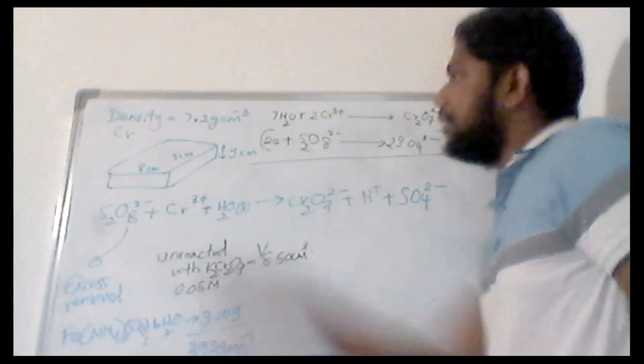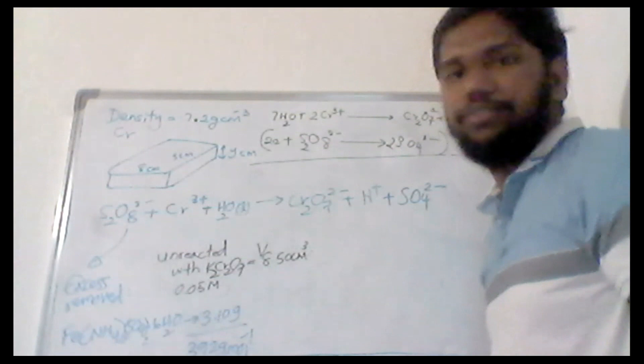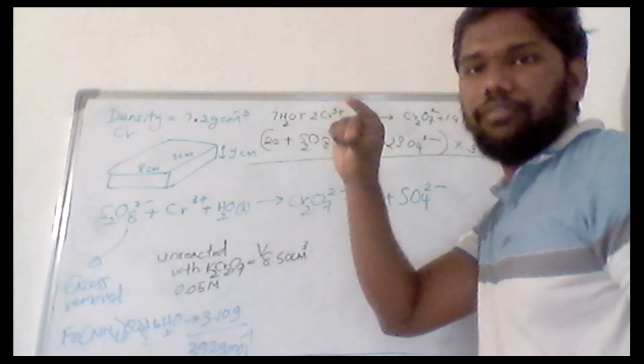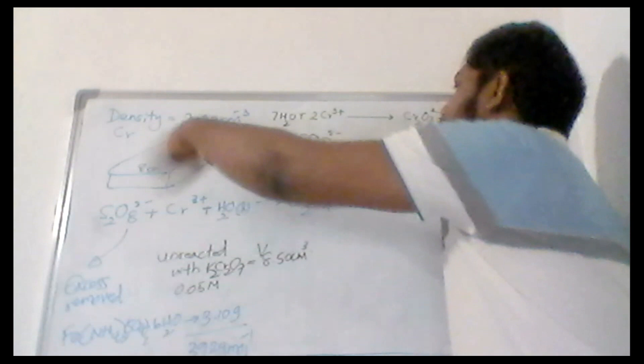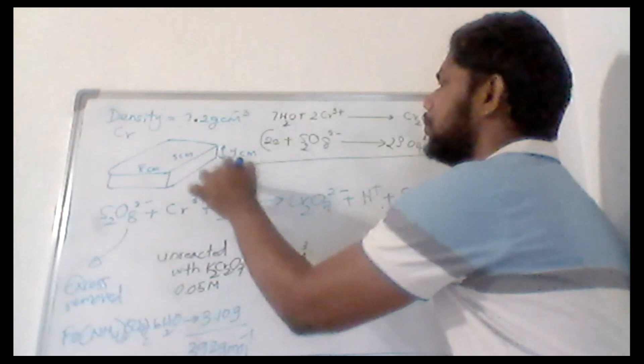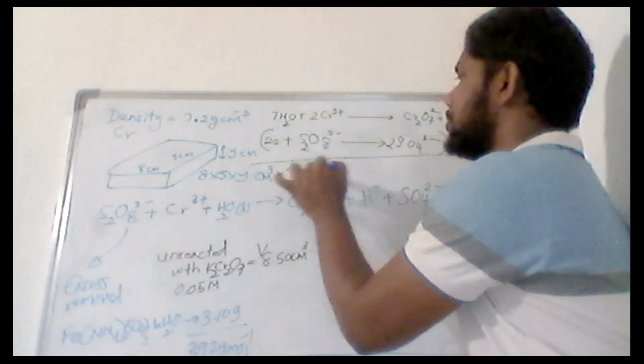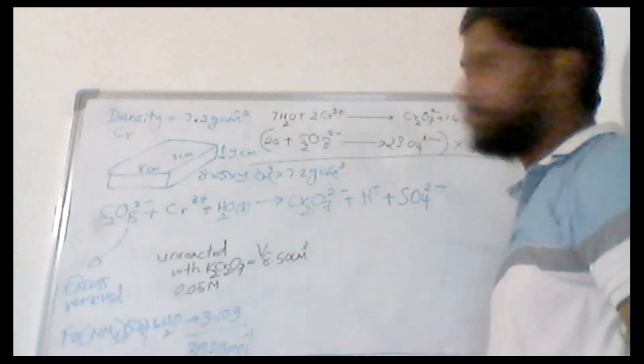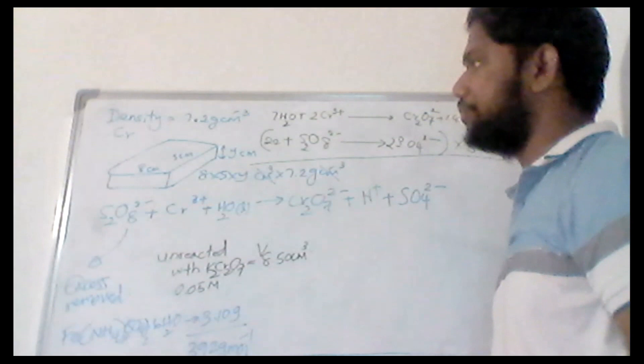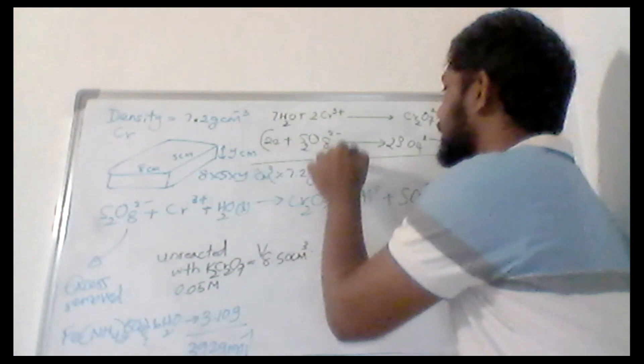Here on the board is the story. They have a rectangular block with area 8×5 cm², and if you think the thickness of the block is y centimeters, you can calculate the volume as 8×5×y cm³. Then multiply by the density of chromium, 7.2 g/cm³, so you can calculate the weight: 40×7.2×y grams. There is this unknown term y here.